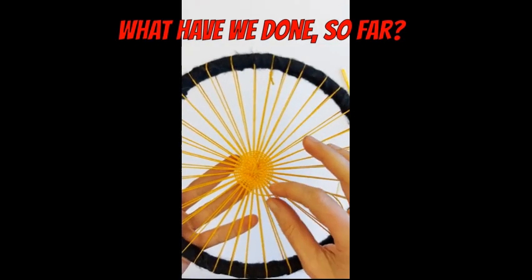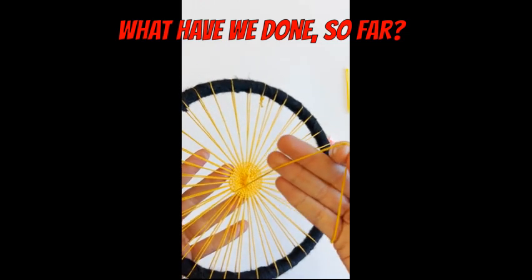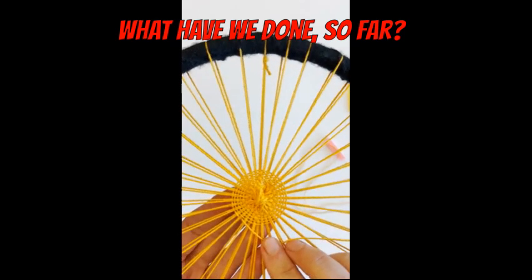So far I've woven just plain weave in the center and you can see that I used a thinner cord for weaving in the center where the spaces are much closer together.